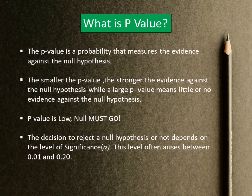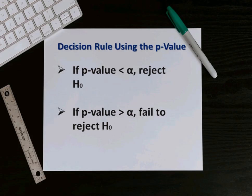P value is low — null must go. The decision to reject a null hypothesis or not depends on the level of significance alpha. This level often falls between 0.01 and 0.20. If P value is less than alpha, reject the null hypothesis. If P value is greater than alpha, fail to reject the null hypothesis.